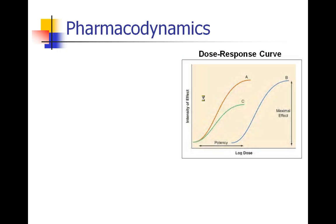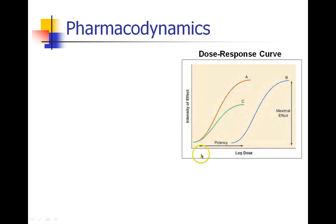When we talk about pharmacodynamics, we usually talk about a dose-response curve. This dose-response curve shows intensity of effect as a function of dose — here we're looking at log dose. A dose-response curve looks at the dose and the response on its axes. This is something I would ask on an exam, so I hope you get these axes correct.